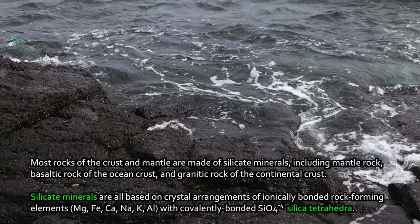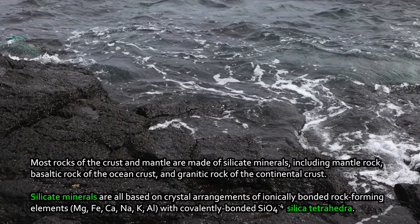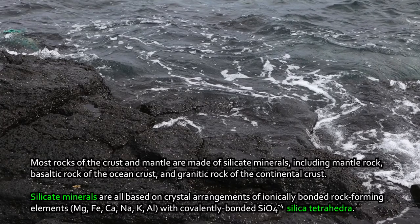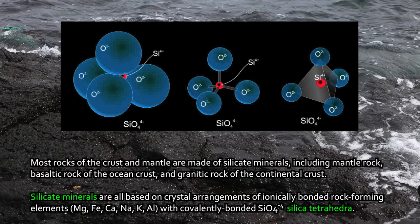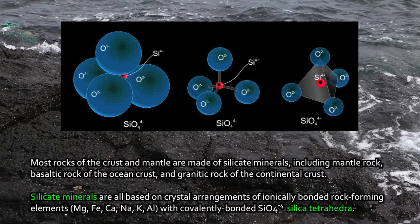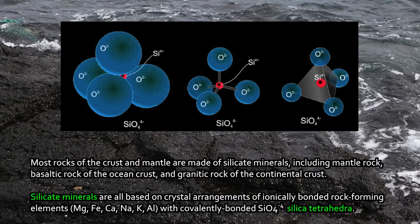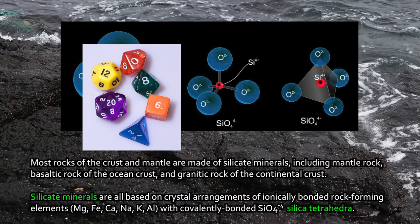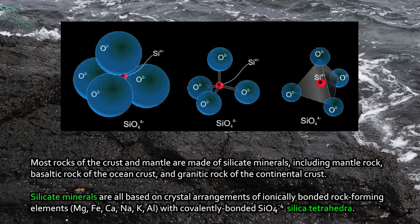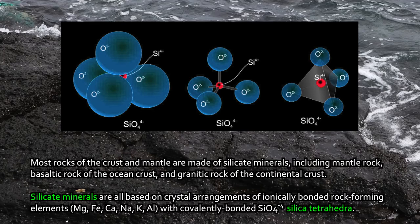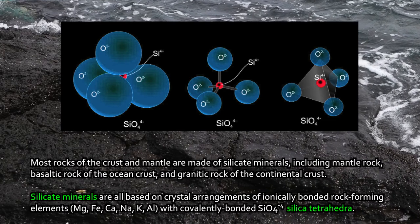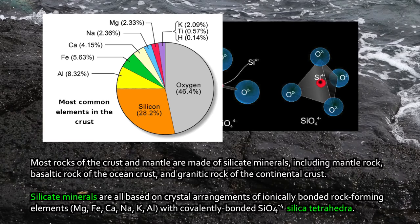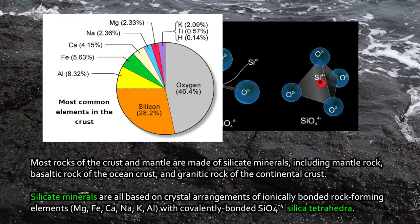Silicates are based upon crystal arrangements of a lot of different rock-forming elements. What they have in common is that the lattice structures are all based around associations of covalently bonded SiO4 groups — groups that we call silica tetrahedra, because they take a tetrahedral form. The way the silicon and oxygens in a silicate mineral behave, they arrange themselves naturally into these tetrahedral shapes like a four-sided die. About half of the mass of the crust is oxygen, if you look at it just in terms of the elemental composition of the rock itself.